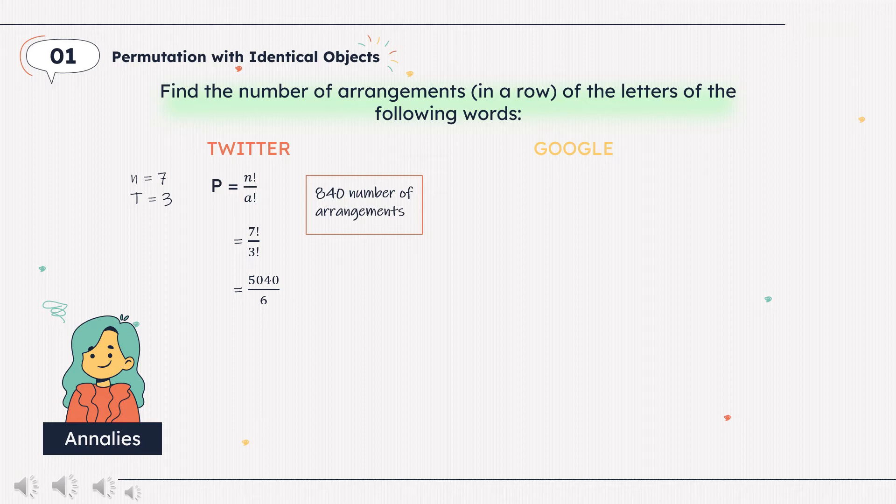For the solution in number 2, in this case, there are total of 6 letters which 2 G's are identical and 2 O's are identical. The number of arrangement will be 6 factorial over 2 factorial, 2 factorial or 180.